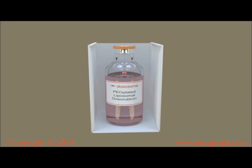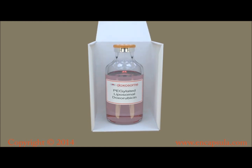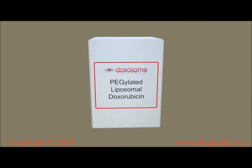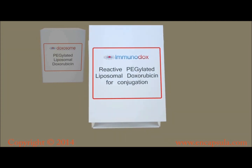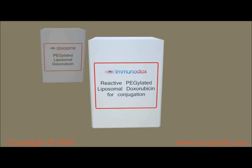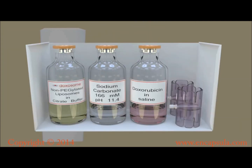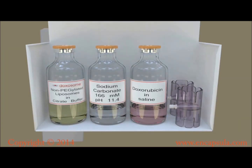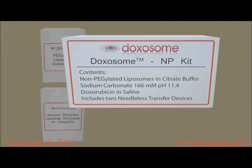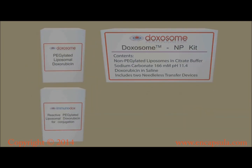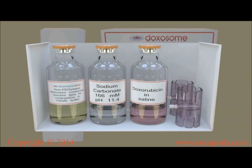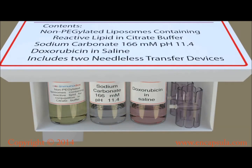Pegylated doxorubicin liposomes are shipped as one vial, as are our pegylated immunodox products, with doxorubicin already remote-loaded into the pegylated liposomes. All non-pegylated products come in 3-vial kits that include 2 needleless transfer devices to perform the remote loading via pH gradient on site.